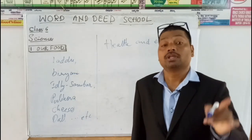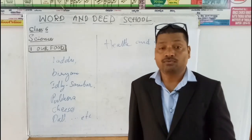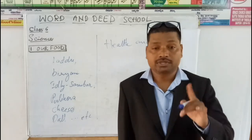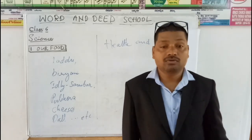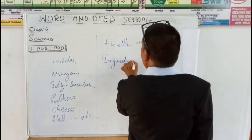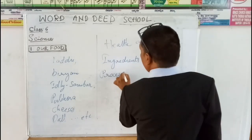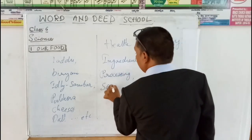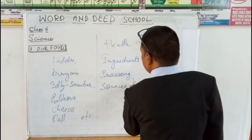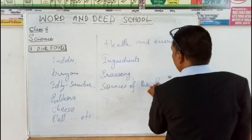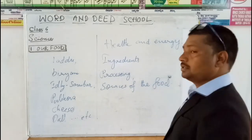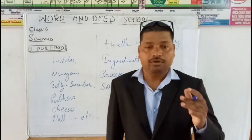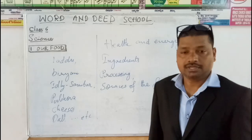We should also know the materials required for preparing the food that we eat. This type of information is very important. So, we will discuss the ingredients, processing, and sources of the food. We will learn about all of these things in this lesson in detail.